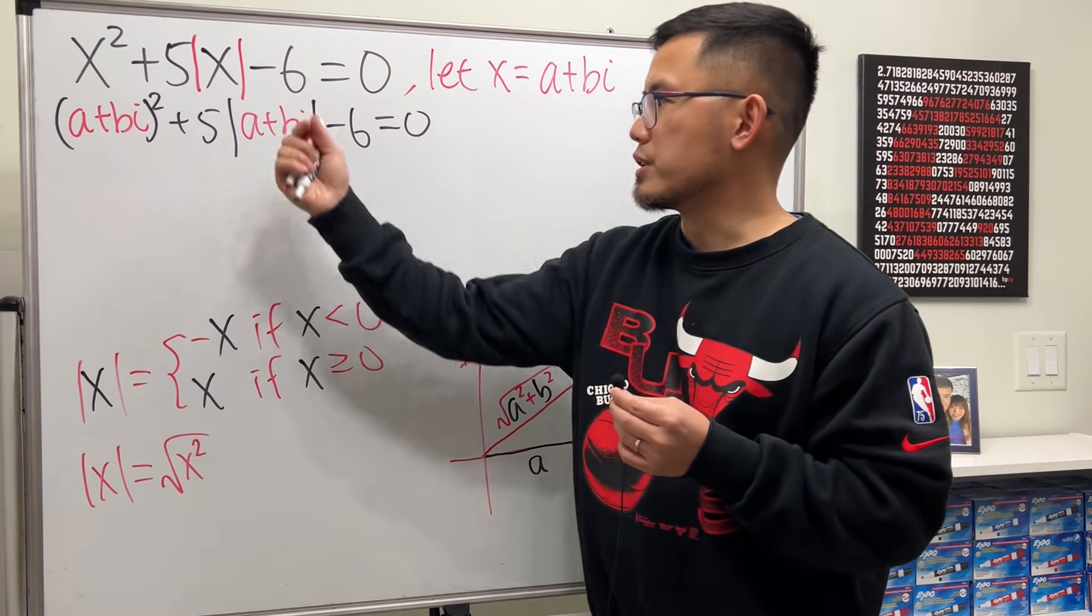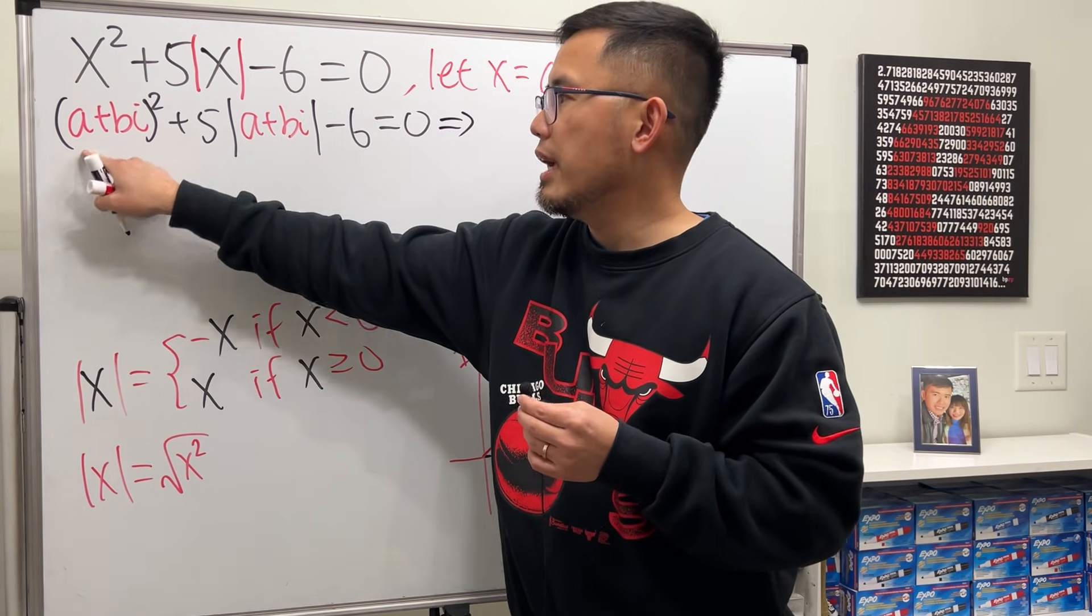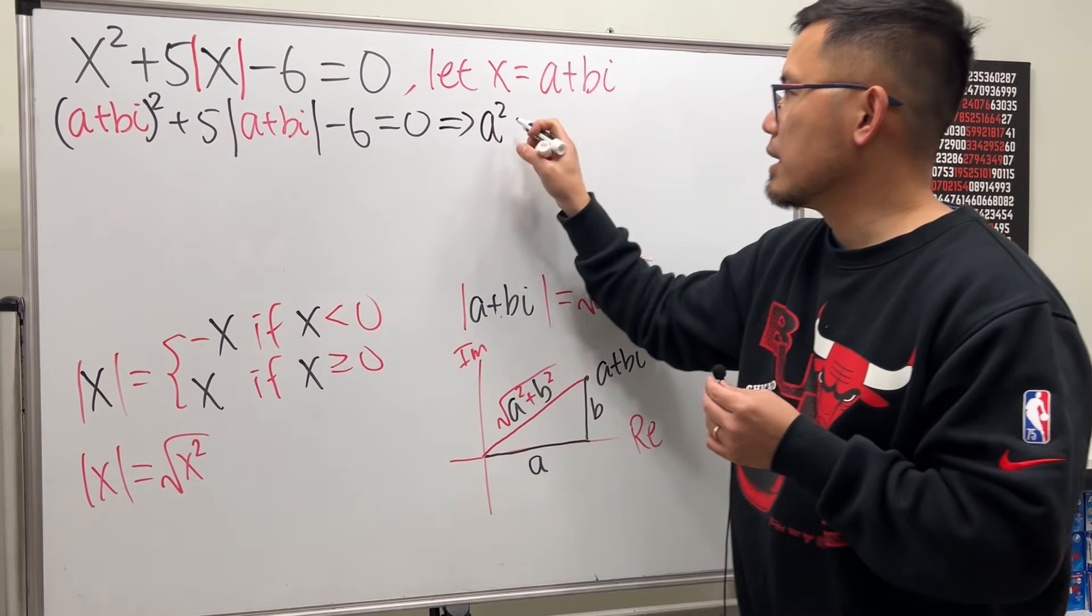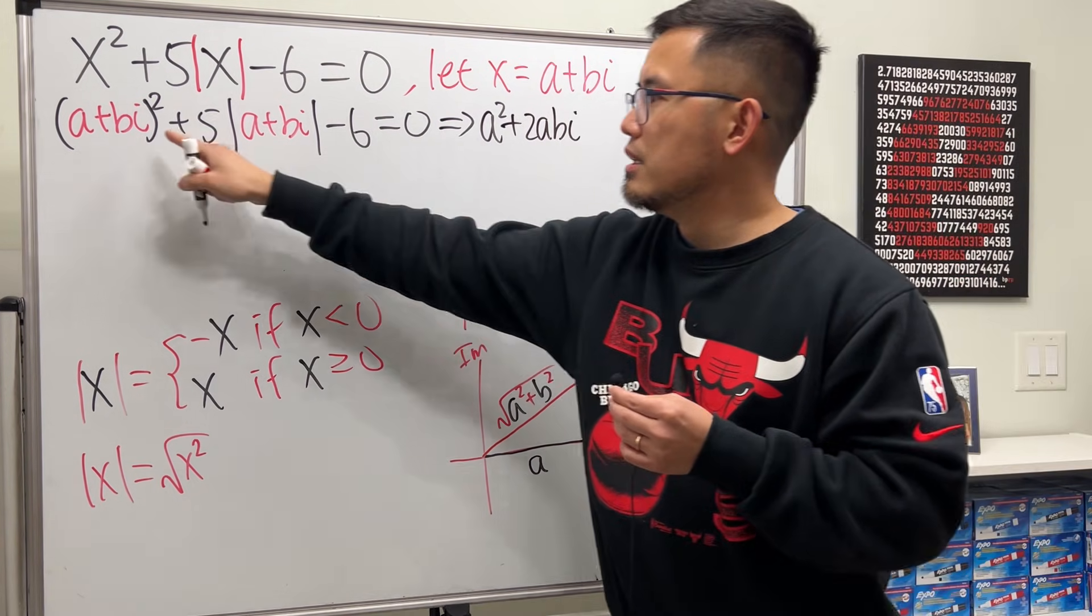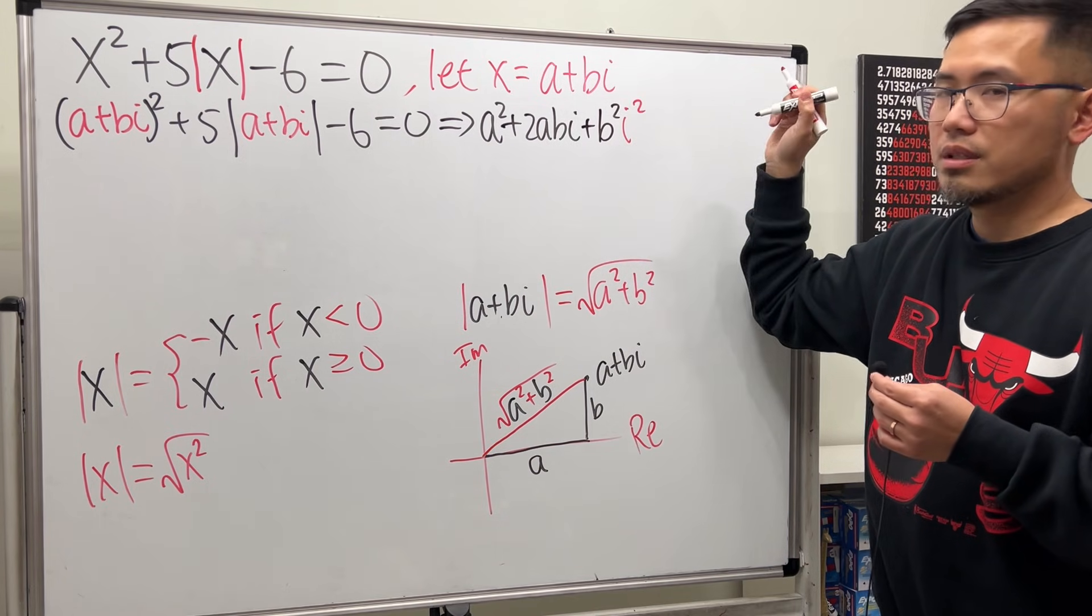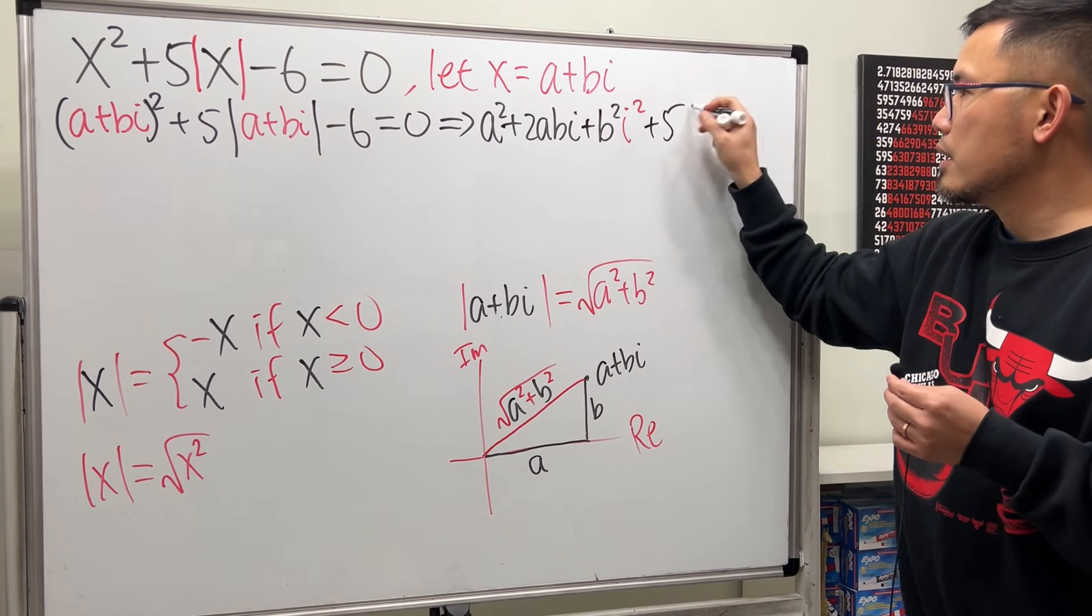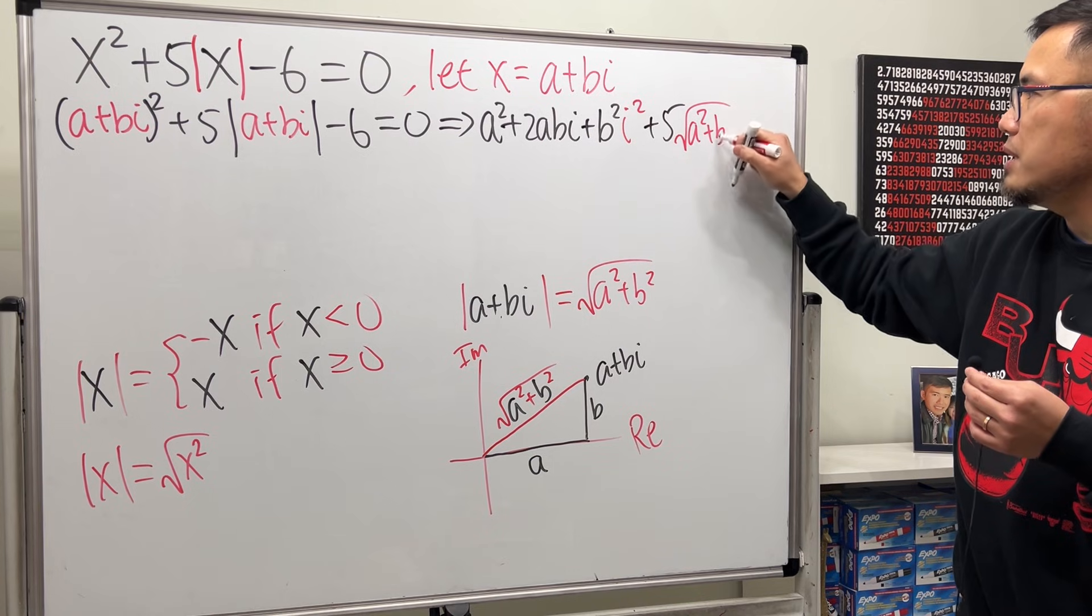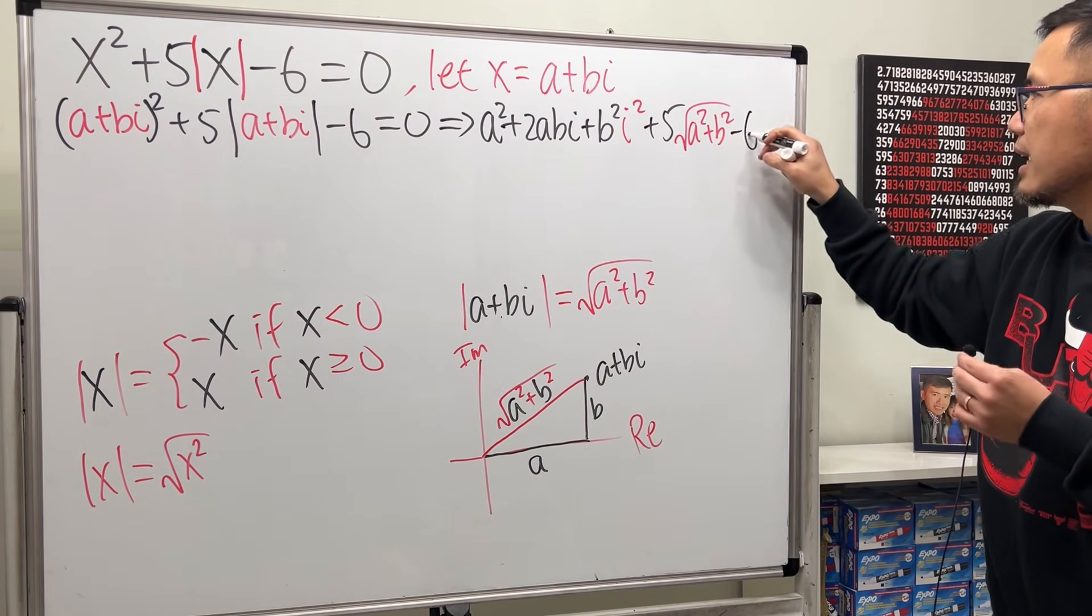So let's go ahead and just work this out. This is going to give us, multiply this out, a squared first. And then I will have two times this and that, so plus 2abi. And lastly, square this, b squared, and then also i squared. Continue. We have plus 5. This part is this, so square root of a squared plus b squared. And then finally, we have the minus 6, and that is equal to 0.